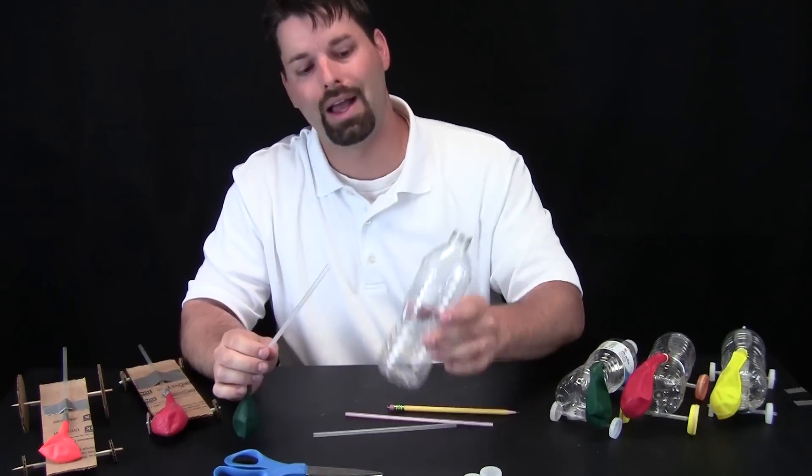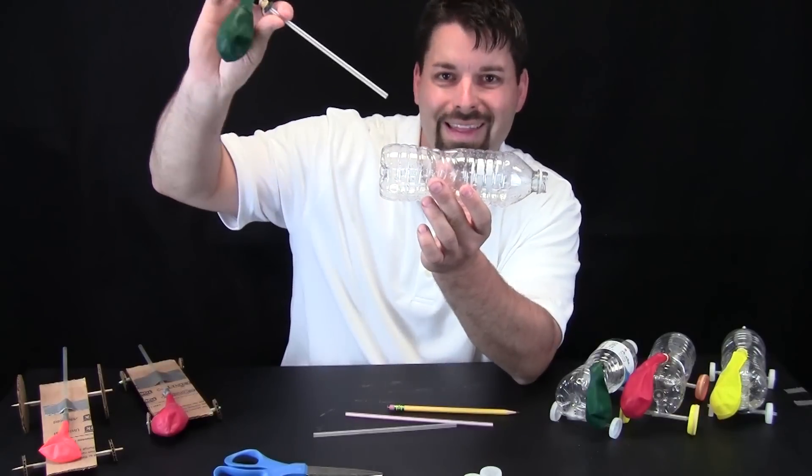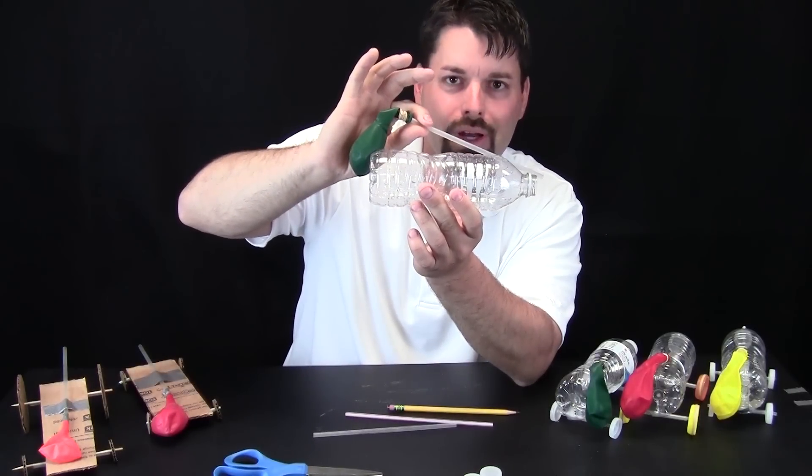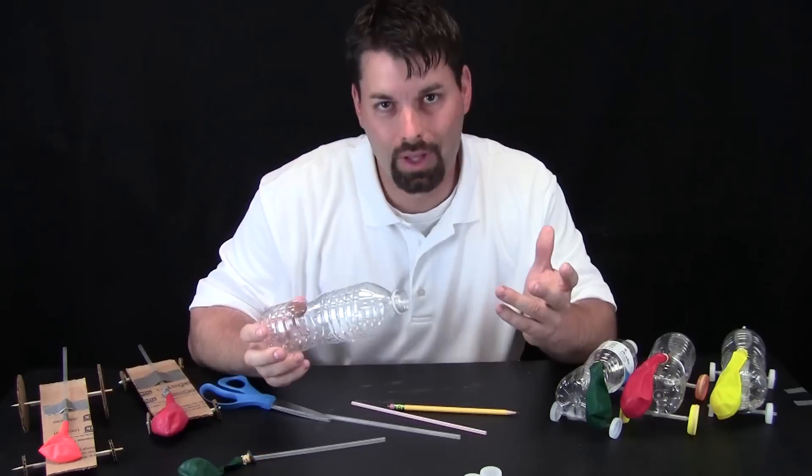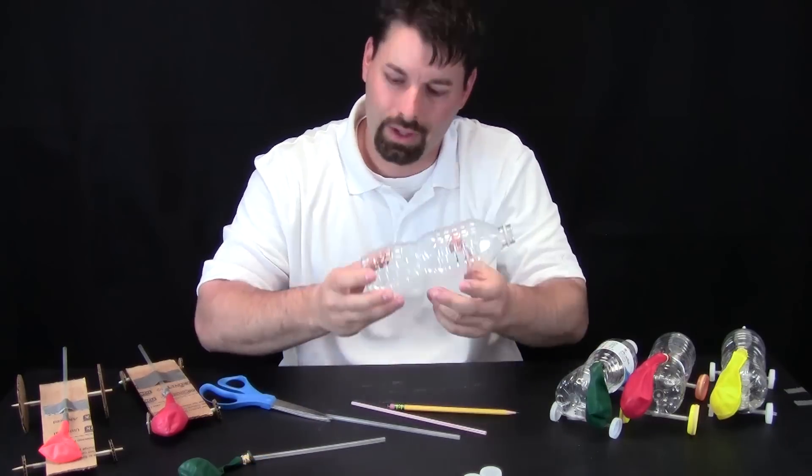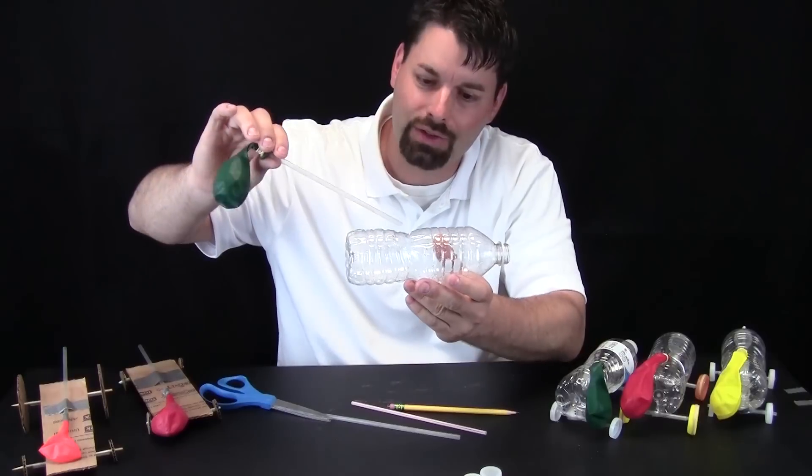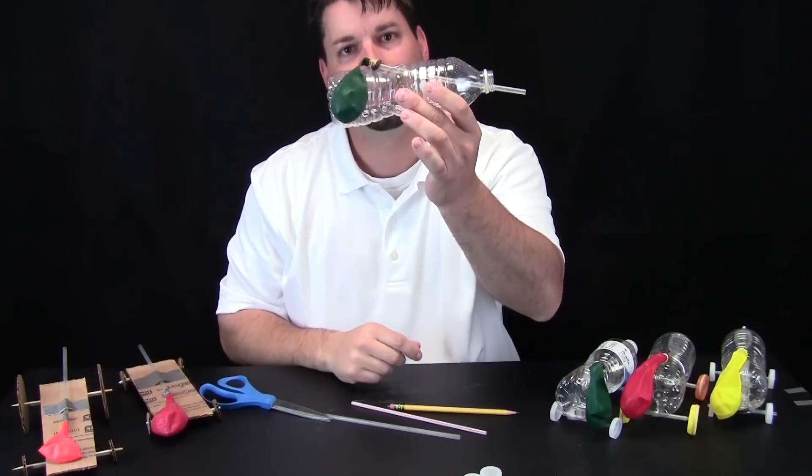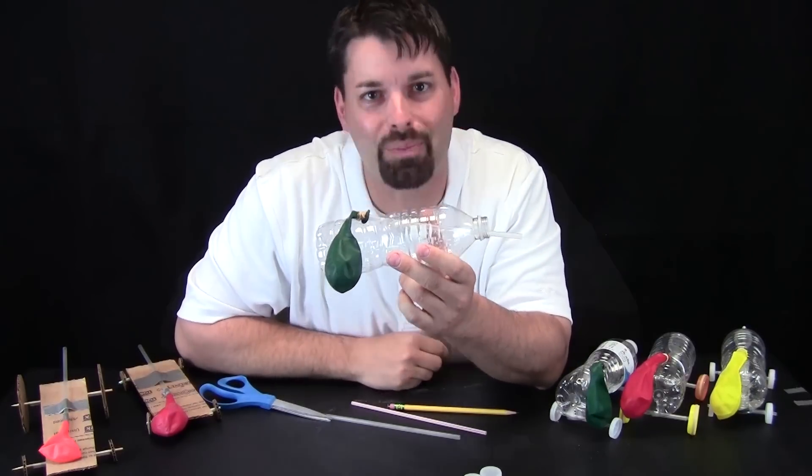Step number two, I need to cut a hole in the bottle so that I can pass my straw through the bottle so it comes out the neck. Step number three, I now have the hole cut and I need to pass the straw through the hole out the neck of the bottle and I can see my car starting to take shape.